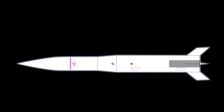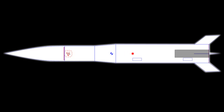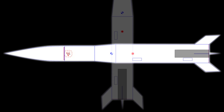A rocket's stability comes from the relationship between the rocket's center of mass — the point where you can balance it on one finger — and the center of pressure, the point where all the aerodynamic forces are balanced. In general, you want the center of mass in front of the center of pressure, and ideally the distance between the two should be between one and two times the diameter of the rocket.